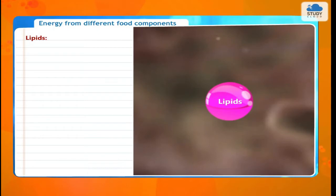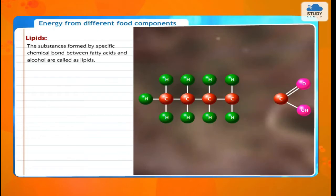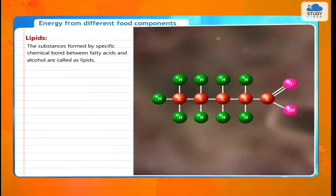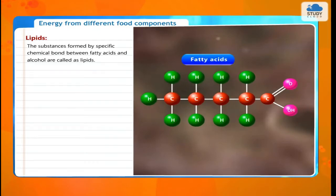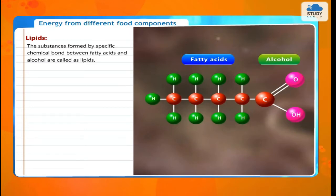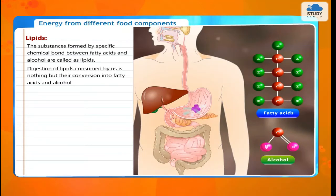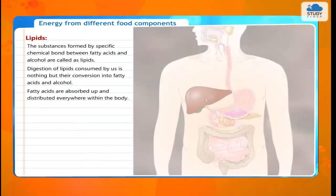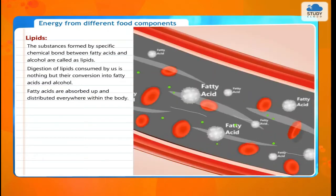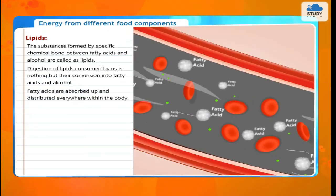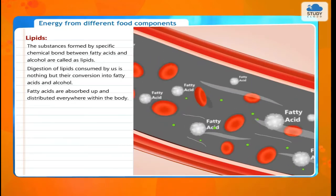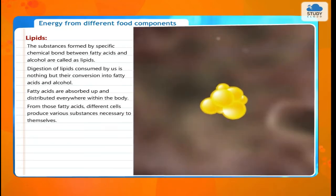Lipids: the substances formed by a specific chemical bond between fatty acids and alcohol are called lipids. Digestion of lipids consumed by us is their conversion into fatty acids and alcohol. Fatty acids are absorbed and distributed everywhere within the body.